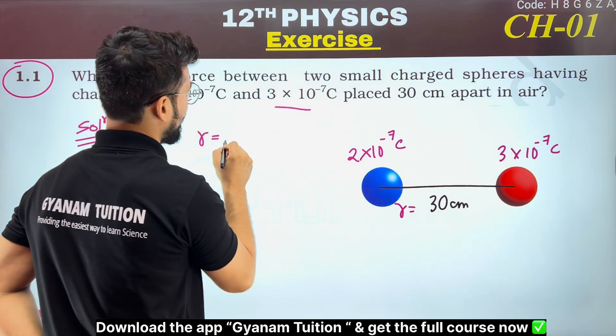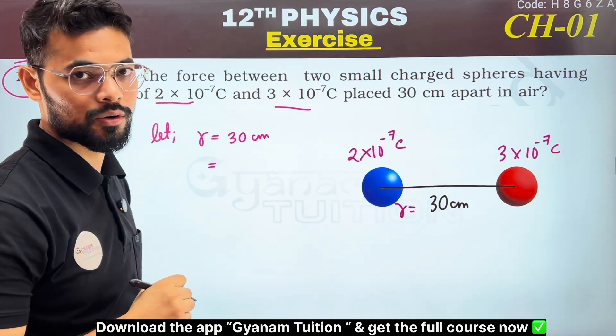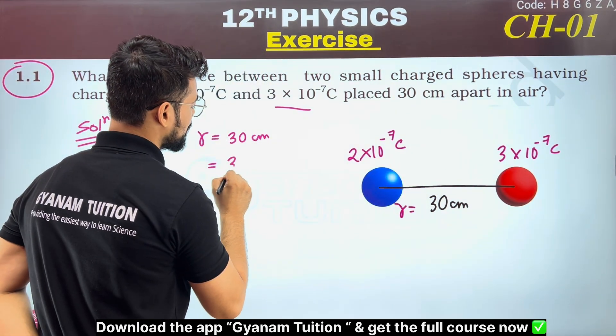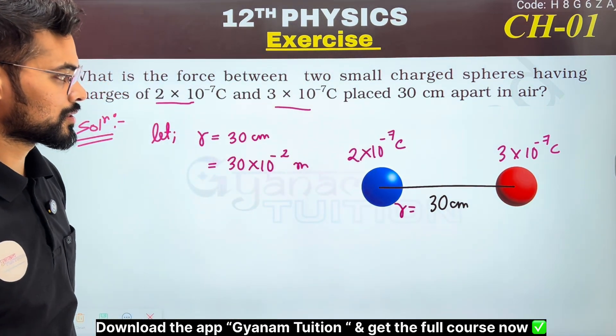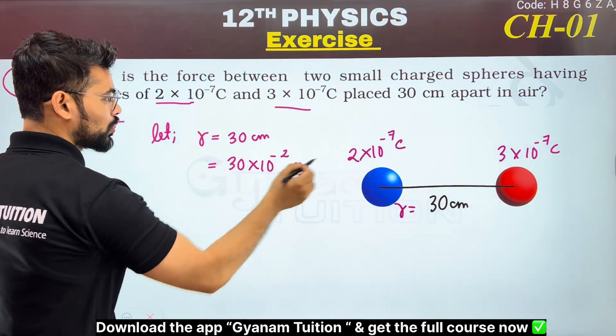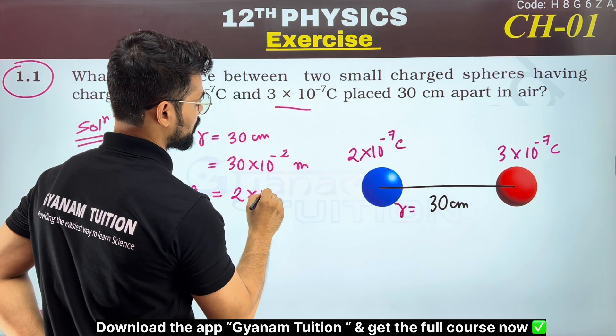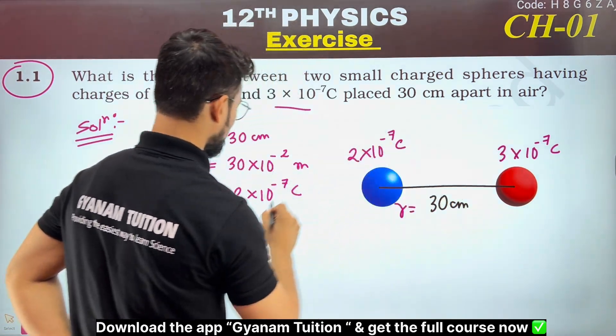The distance between them is given. For the distance r, r equals 30 centimeters. We need to convert to SI units, so it becomes 30×10⁻² meters. The charges are: suppose this is q₁, it equals 2×10⁻⁷ coulomb, and q₂ equals 3×10⁻⁷ coulomb.